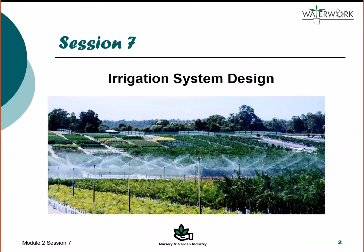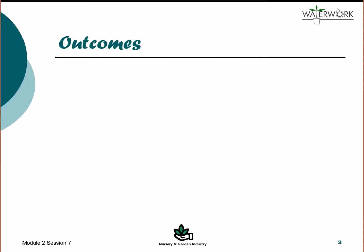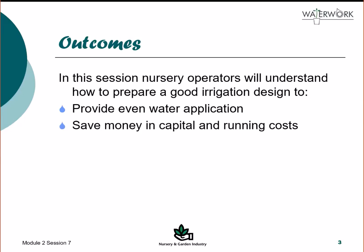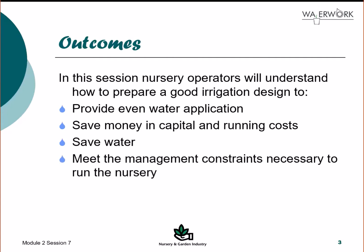Efficient irrigation systems deliver real economic benefits to a nursery. The aim of any design is to apply enough water evenly to meet all plant needs in the time available. This webinar details the requirements for designing a nursery irrigation system to provide even water application, save money in capital and running costs, save water, and meet the management constraints necessary to run the nursery.